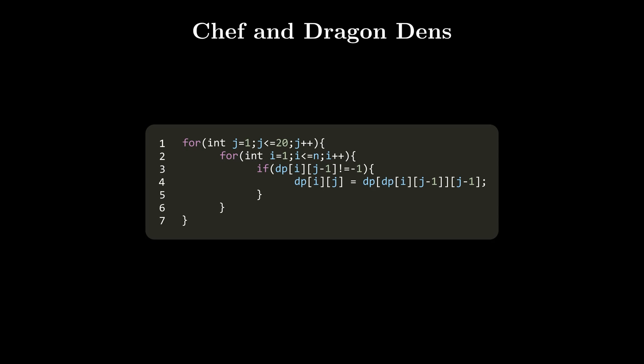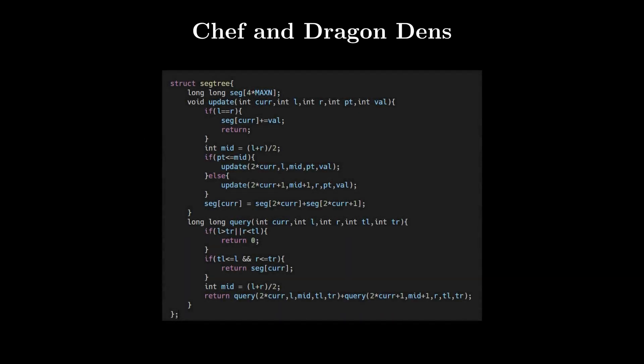We initially calculated dp[i][0] during our DFS and use it to build the rest of the array. It's also possible to check ancestry without binary lifting: if node A is an ancestor of node B, then T_in[A] ≤ T_in[B] and T_out[B] ≤ T_out[A], allowing O(1) ancestor checks with precalculated T_in and T_out values. The segment tree used is a standard point update sum segment tree.